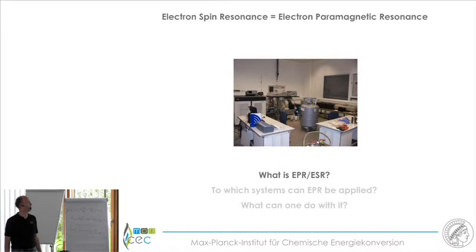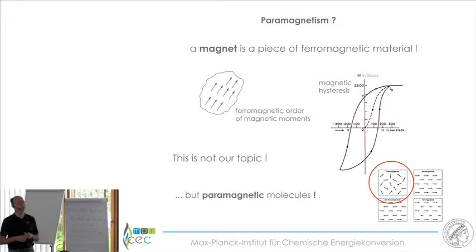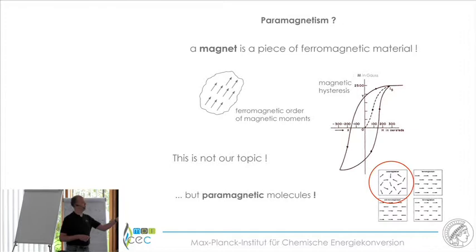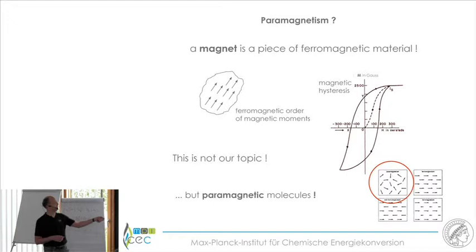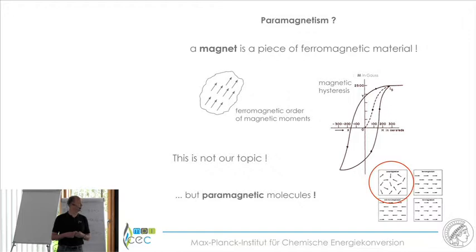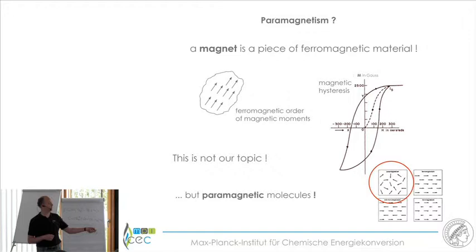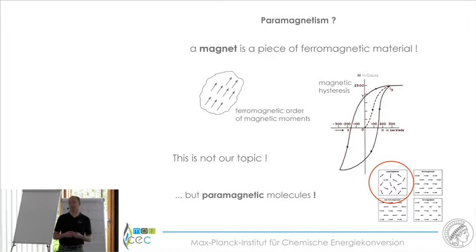EPR is the same as ESR, Electron Spin Resonance, or Electro-Paramagnetic Resonance. We are dealing with paramagnetism, not to be confused with ferromagnetism. A ferromagnet — for example a piece of iron — has all its microscopic magnetic elements aligned, giving a macroscopic magnetic moment. In paramagnetic systems, such as magnetic molecules in solution, each molecule is magnetic, but the interaction between electron spins on different molecules is essentially zero, so there is no ordering of the magnetization. That is a paramagnetic system.